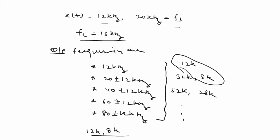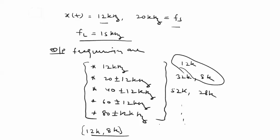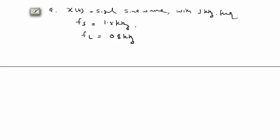If we do not apply a filter after sampling, all frequencies are available in the output. If we apply a filter, only limited components pass through. A low pass filter or band pass filter selects certain components according to our requirement from the sampled output. Moving to the next GATE question.